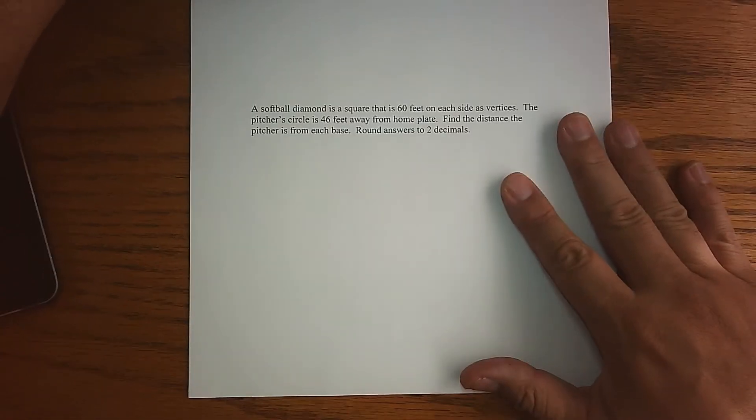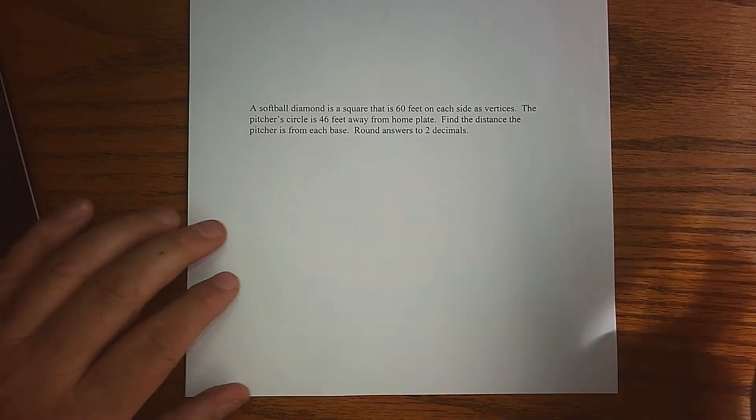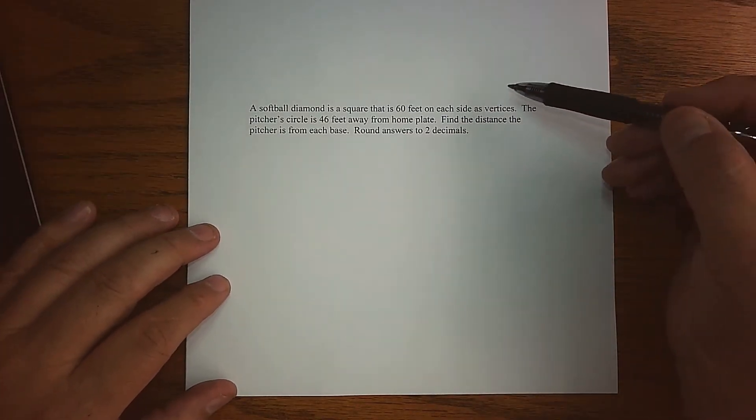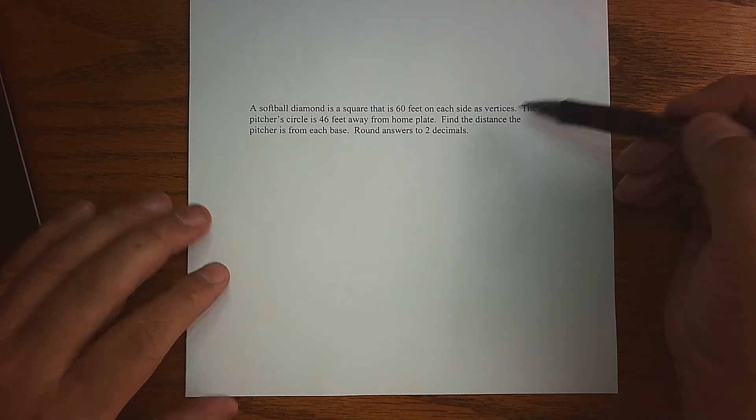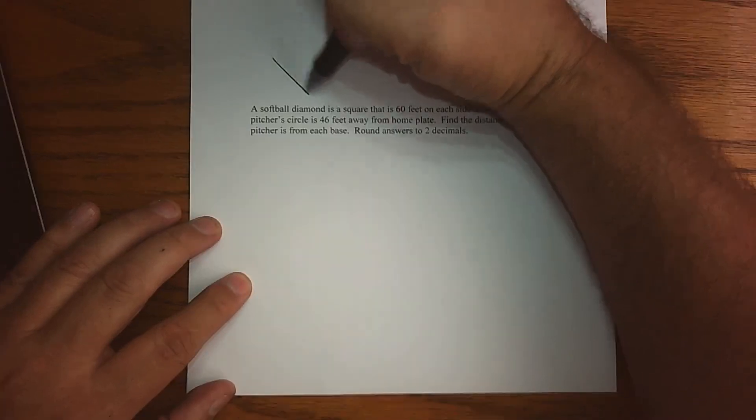Okay, so let's do a little bit of an application where the Law of Cosines will come into play, and perhaps some review. What we're dealing with is a softball diamond, and the way a softball diamond is built is as a square.